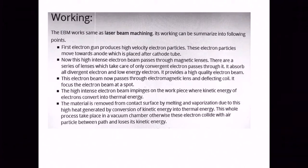In the working process, first the electron gun produces high velocity electron particles. These electron particles move towards the anode which is placed after the cathode tube. Now this high intense electron beam passes through the magnetic lens.